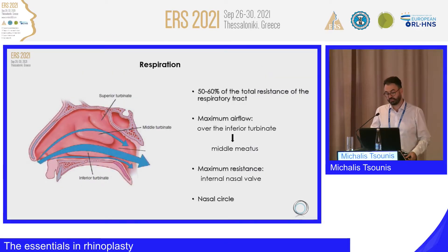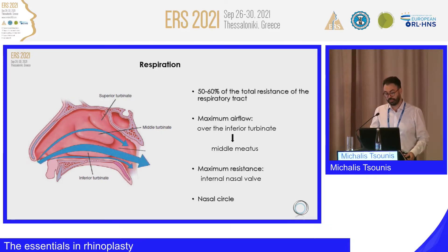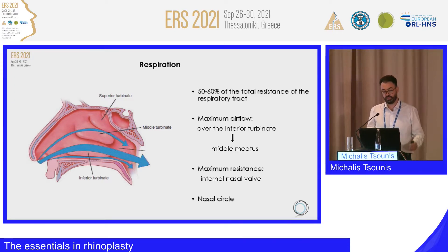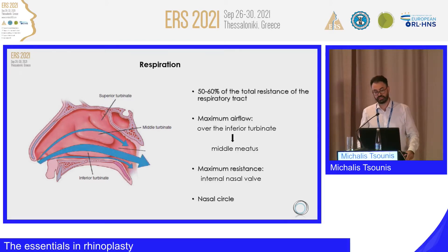In terms of respiration, 50 to 60 percent of the total resistance of the respiratory tract is found in the nose when the mouth is closed; when we open the mouth, this resistance drops to about 20 percent. The maximum airflow is over the inferior turbinate, continues to the middle meatus and exits through the choana. The maximum resistance is at the area of the internal nasal valve.